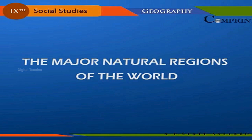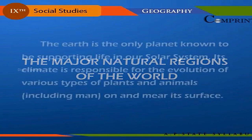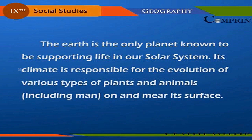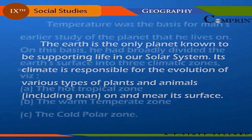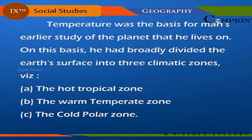The major natural regions of the world. The Earth is the only planet known to be supporting life in our solar system. Its climate is responsible for the evolution of various types of plants and animals on and near its surface. Temperature was the basis for man's earlier study of the planet that he lives on, and on this basis, he had broadly divided the Earth's surface into three climatic zones.